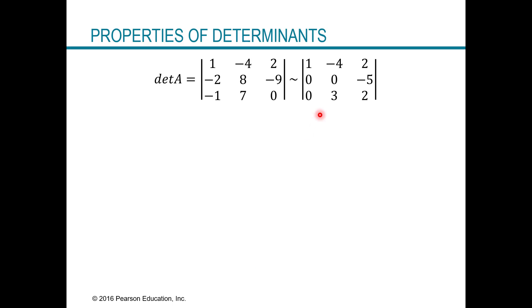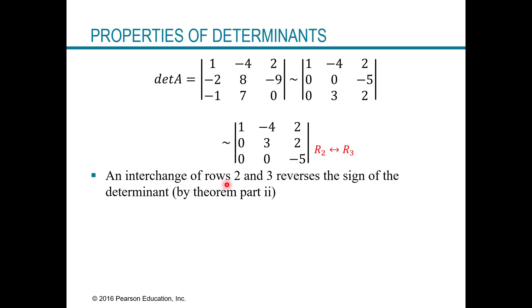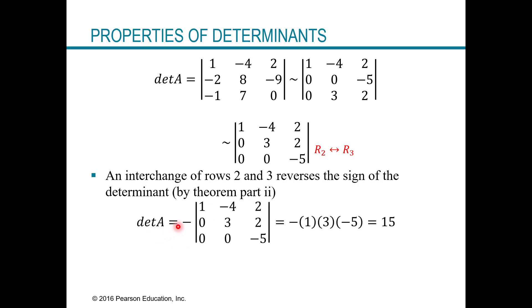Now let's go ahead and interchange rows two and three, because row three now has zeros followed by our number, giving us triangular or echelon form with zeros underneath the pivots. But according to our theorem, if we interchange two rows the sign of the determinant changes. So the determinant of the original matrix is the negative of the determinant of this new matrix. Since it's in triangular form, the shortcut gives us one times three times negative five, and with the negative sign applied we get 15 — which matches what we got the other way.